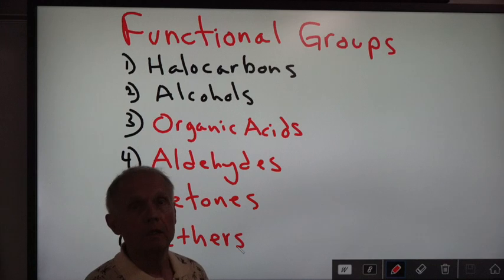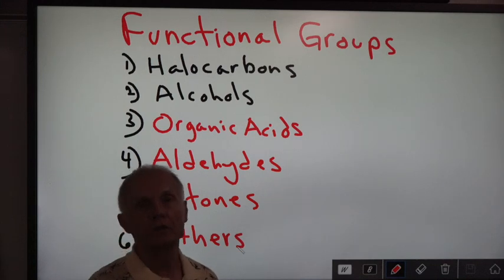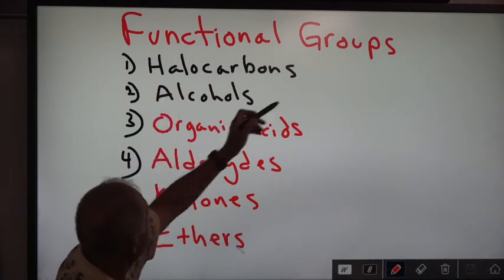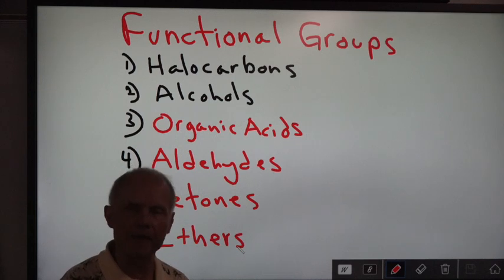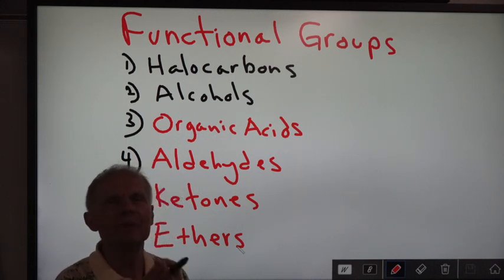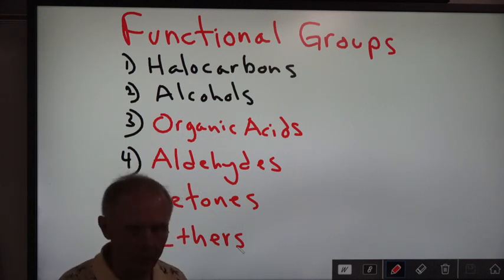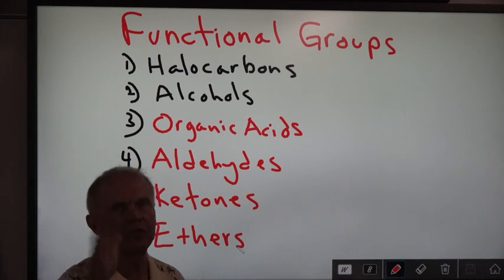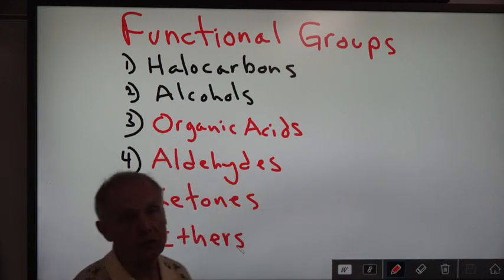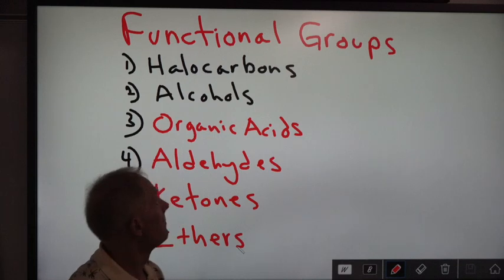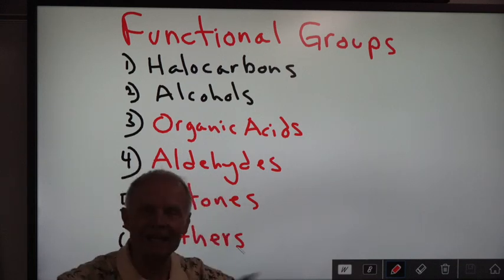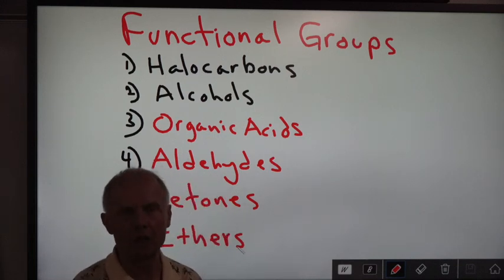The last video we did was on two functional groups: halocarbons and alcohols. Halocarbons are fluorine, chlorine, bromine, and iodine put on a hydrocarbon chain — they can be put anywhere on the chain. Alcohols have a hydroxy group, which is OH, with a charge of minus one, and they can also be put anywhere on the hydrocarbon chain.